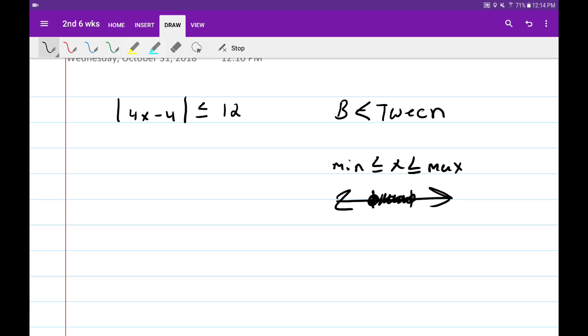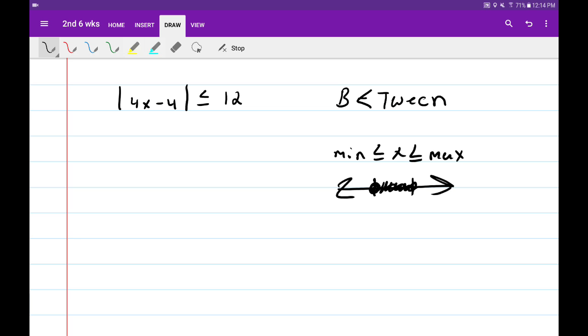And all the x values are going to be in between those two numbers. So all I've got to do is just figure out what those numbers are, and I'm good to go. So I already have an idea of what that's supposed to look like.